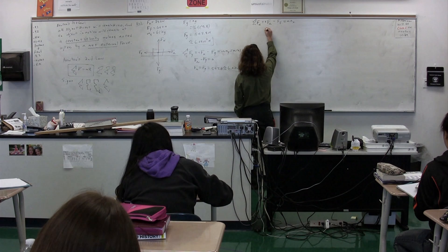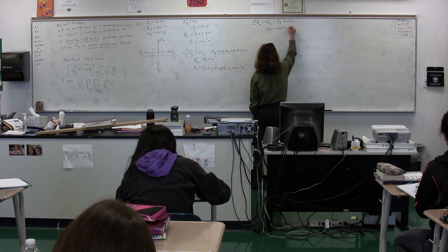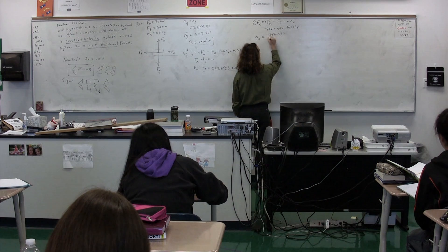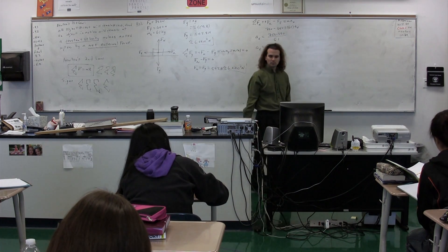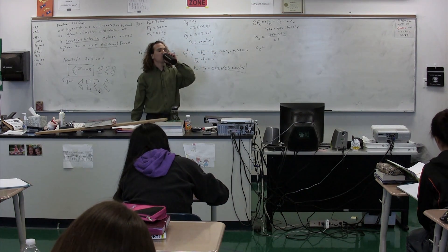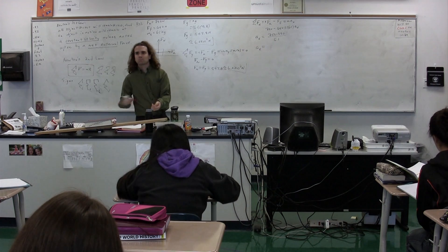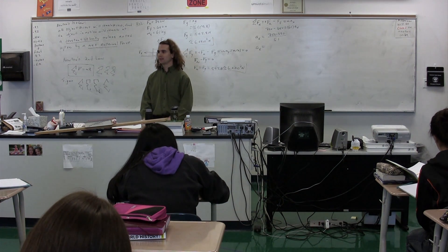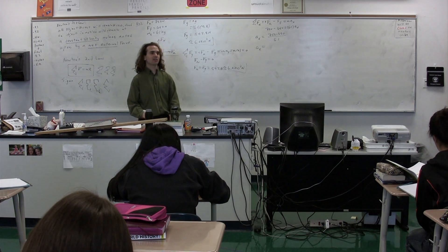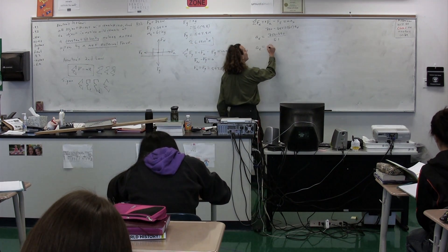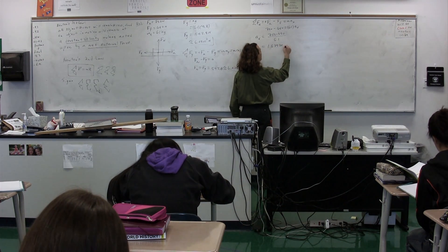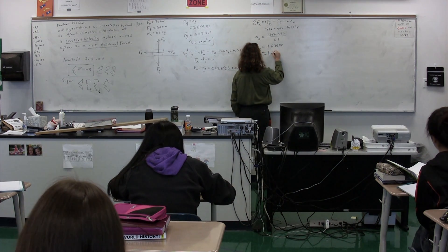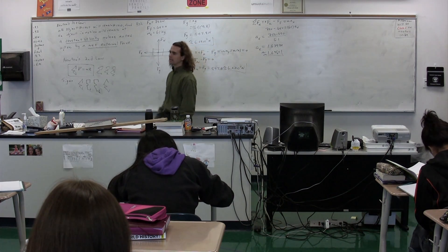We have all the numbers. The force applied was 750 minus the force of friction, which is 650 — that's equal to the mass, 61, multiplied by the acceleration in the x direction. Christina's acceleration in the x direction is 750 minus 650 divided by 61, which gives 1.6 meters per second squared.